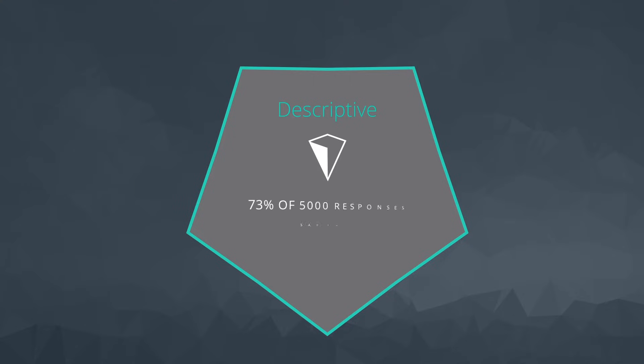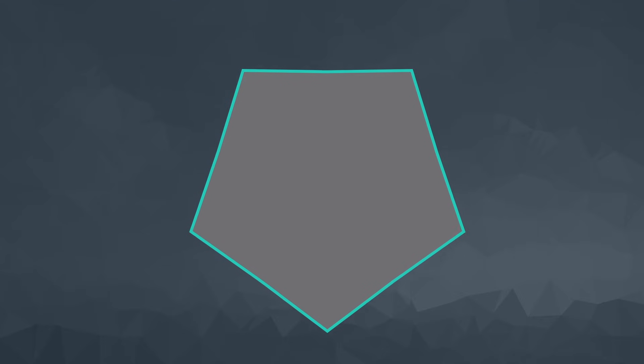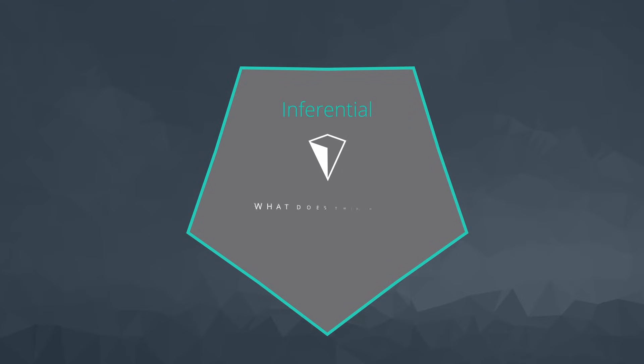Descriptive statistics is about describing the data we have — that is, any information we have and share regarding the 5,000 responses is descriptive. Inferential statistics is about drawing conclusions regarding the coffee drinking habits of all Udacity students using only the data from the 5,000 responses.